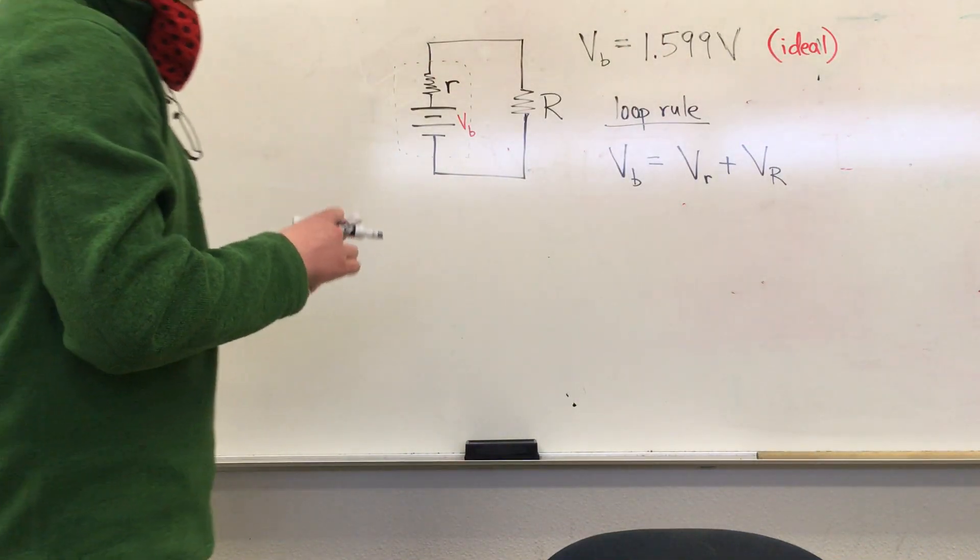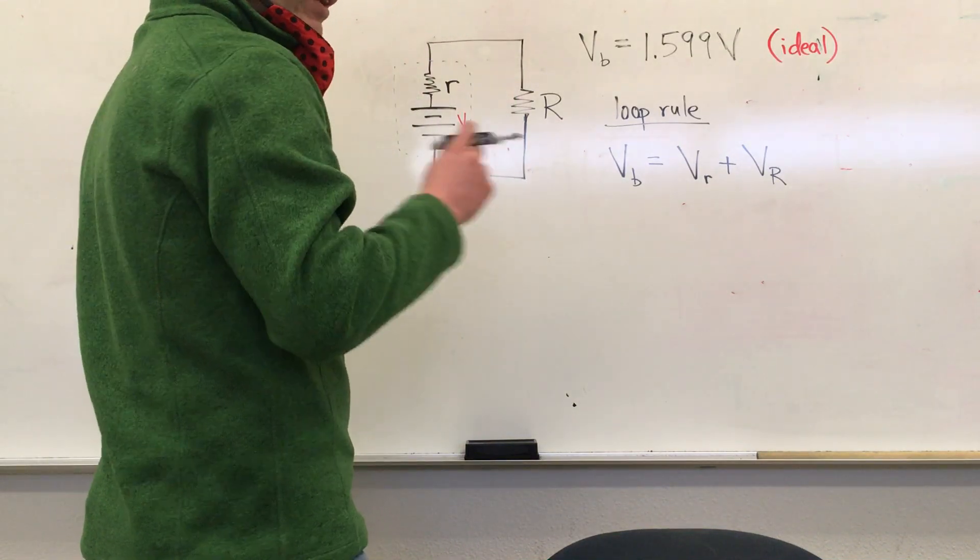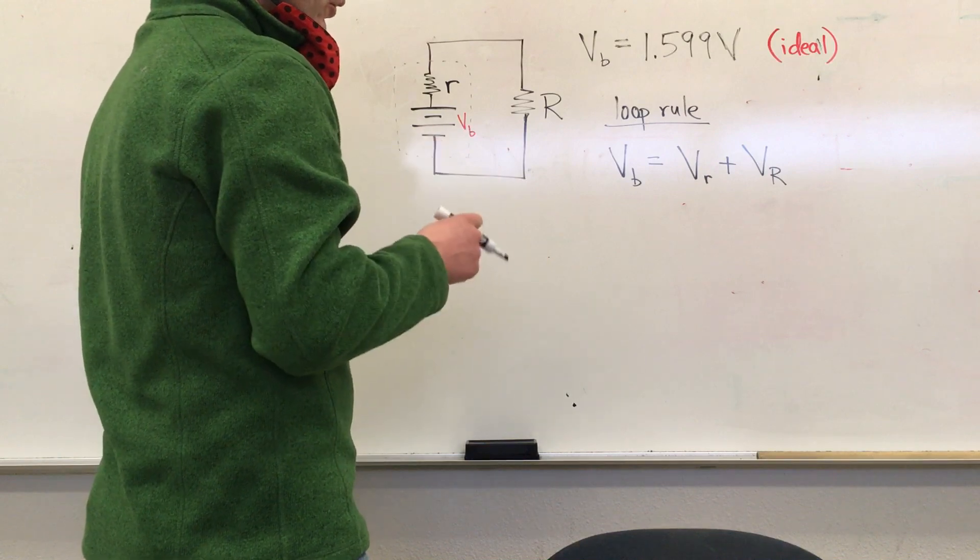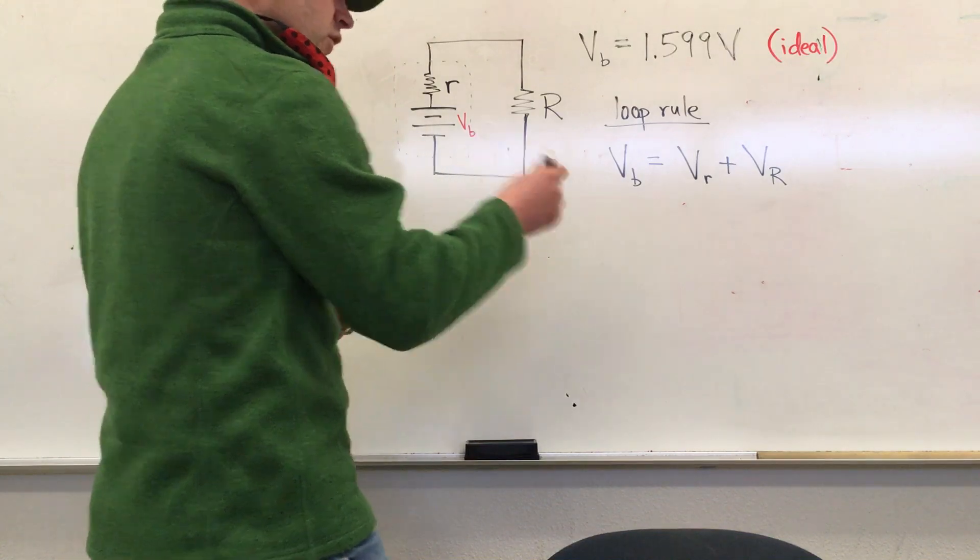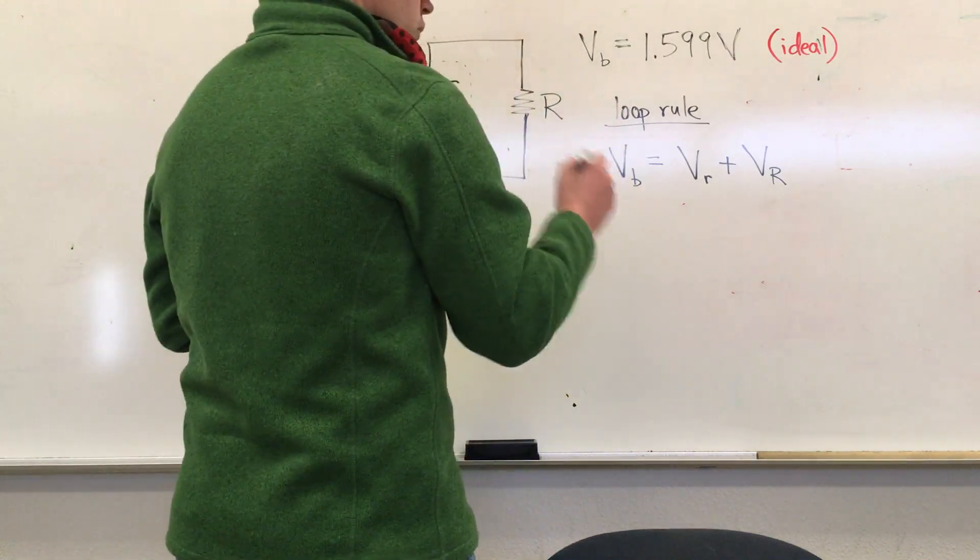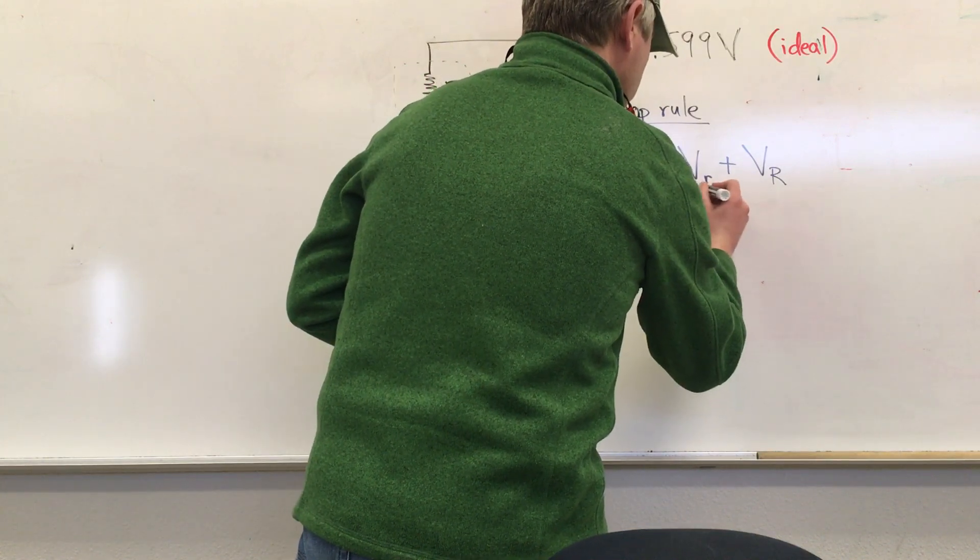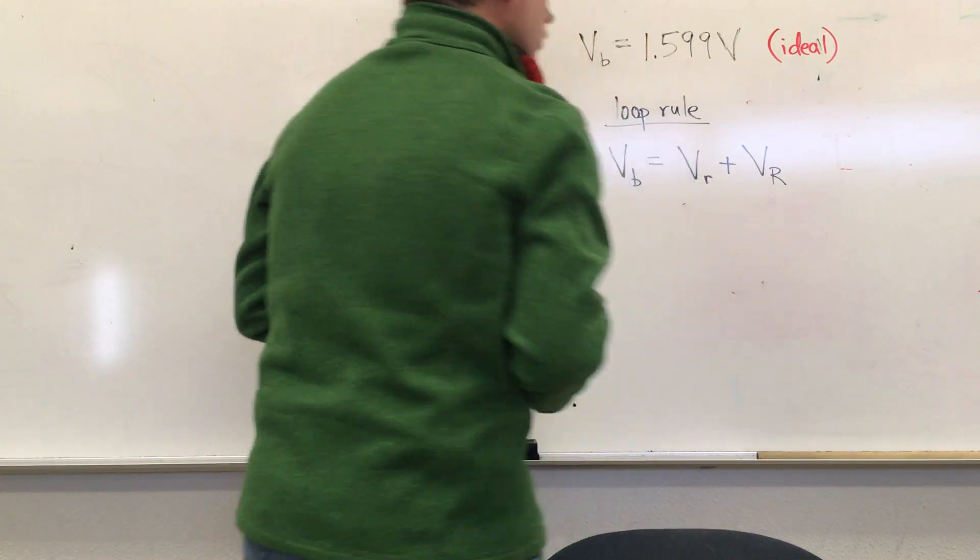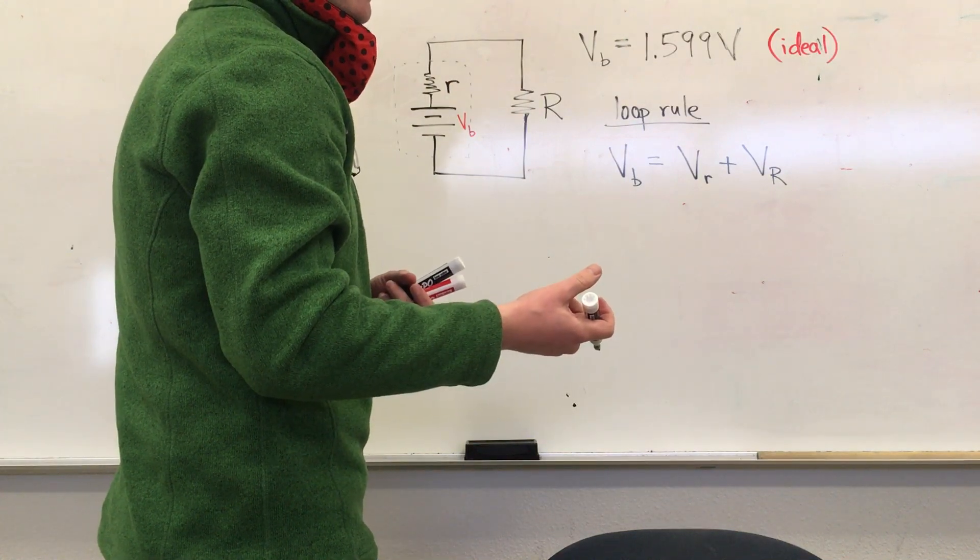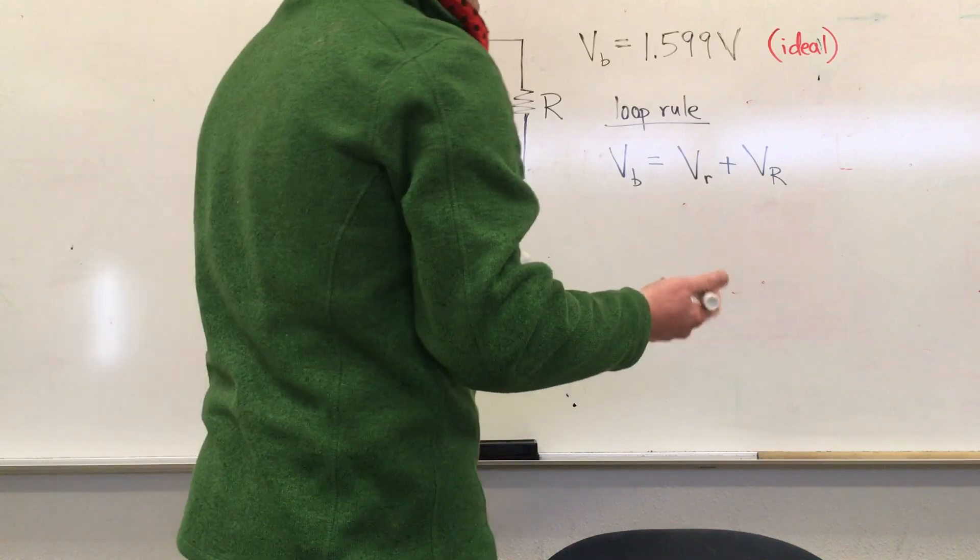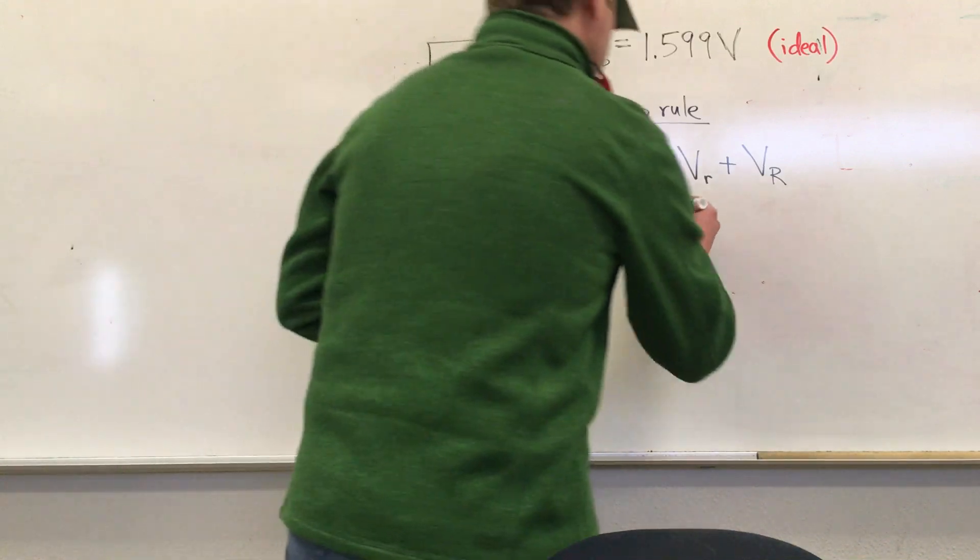Now there's a couple of things we don't know here, but that we can figure out. Our eventual goal is to find little r, and so the first thing we want to do is rewrite this term right here as the product of the current running through the internal resistance and the internal resistance itself. That gets the thing that we want to find into our equation.